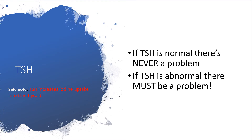The number one rule you should know for answering these questions is that the problem lies in the TSH. Whenever there is a problem in the thyroid, TSH will be abnormal. It is very sensitive to changes in the thyroid, whether hyper or hypothyroidism. TSH has to be abnormal if the thyroid is abnormal. If TSH is normal, there is nothing wrong.